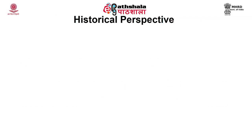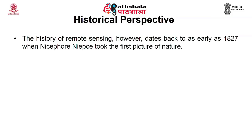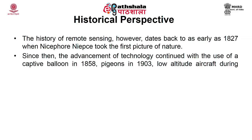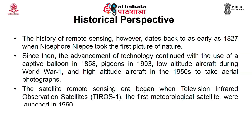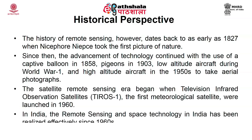Coming to the historical perspective, the history of remote sensing dates back to as early as 1827 when Nicéphore Niépce took the first picture of nature. Since then, the advancement of technology continued with the use of a captive balloon in 1858, pigeons in 1903, low altitude aircraft during the First World War, and high altitude aircraft in the 1950s to take aerial photographs. The satellite remote sensing era began when TIROS-1, the first meteorological television infrared observation satellite, was launched in 1960. In India, remote sensing and space technology has been realized effectively since the 1960s.